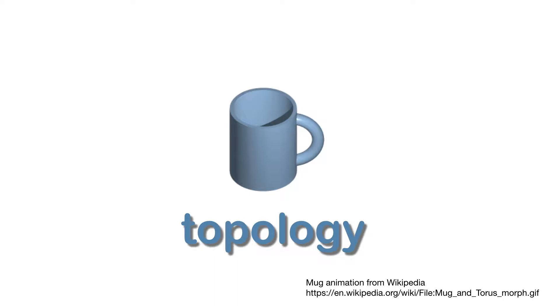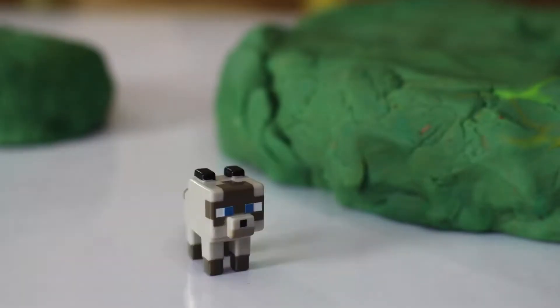Alright, so here's a classic example of topology: a coffee cup is the exact same shape as a donut.